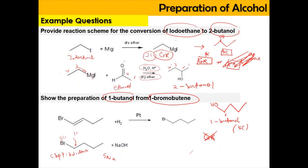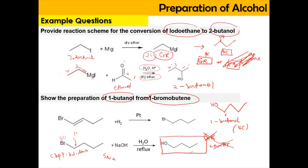Now I draw the structure of 1-bromobutane and react it with NaOH. This undergoes SN2 reaction where Br is replaced with OH. This reaction is from chapter 7 of haloalkane. Since this is a primary haloalkane, it undergoes SN2: OH attacks from the backside, forms an activated complex, and Br is removed as a leaving group in the presence of water and reflux. OH is inserted and Br is removed, producing a byproduct of NaBr. We are interested in the alcohol product, not the byproduct.